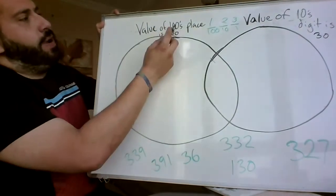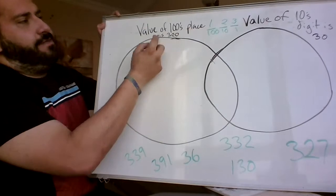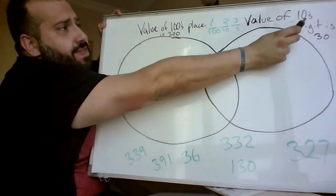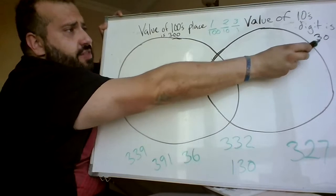So over here, we're looking for numbers where in the 100s place, it's a value of 300. Over here, we're looking for numbers where the value of the 10s digit is 30.